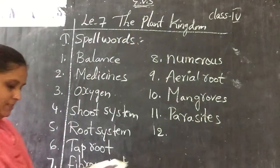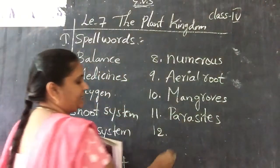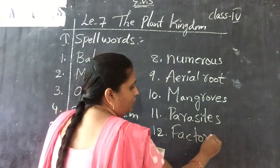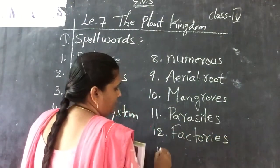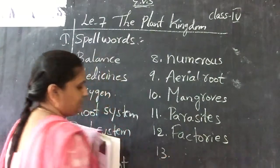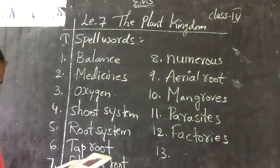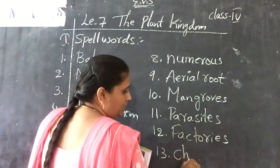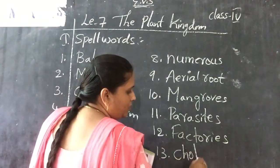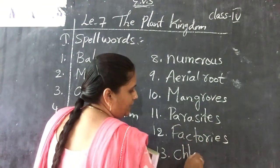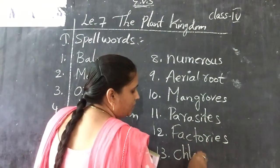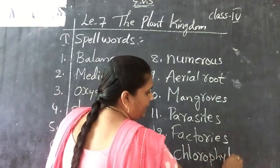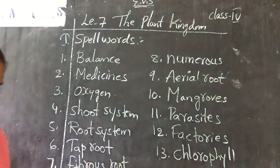Twelfth one: factories — F-A-C-T-O-R-I-E-S — factories. Thirteenth one: chlorophyll — C-H-O-C-H-L-O-R-O-P-H-Y-L-L — chlorophyll.